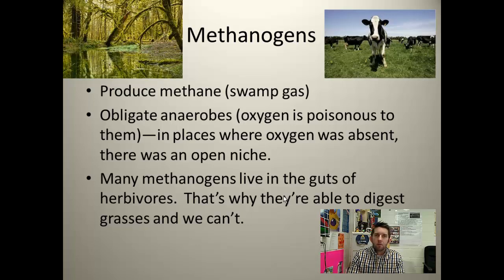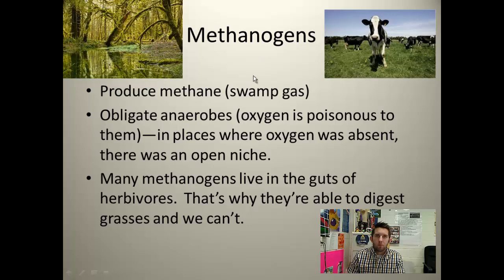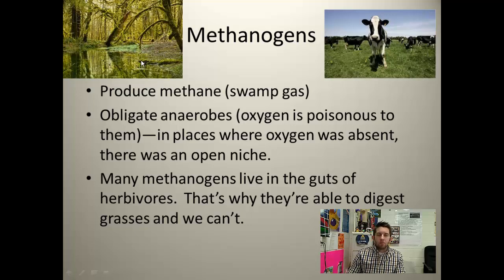For example, the methanogens. As we go through the Archaea, we're going to talk about four different groups, methanogens being the first. The methanogens, as their name suggests, produce methane. Methane is CH4 — it's swamp gas. There's a picture of a swamp here because there are a lot of methanogens in swamps that emit that gas. You can smell it as you walk through.